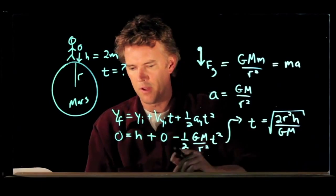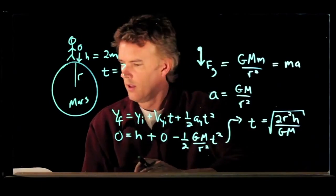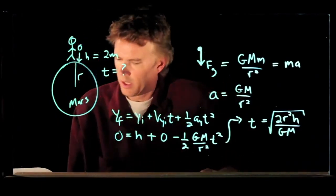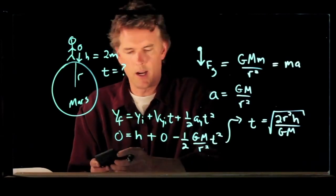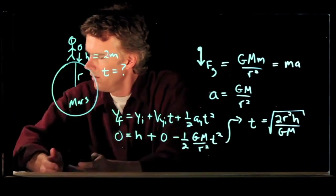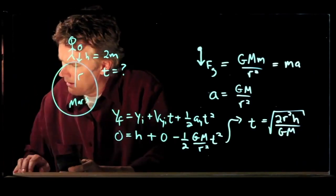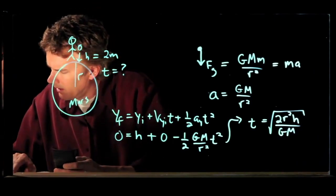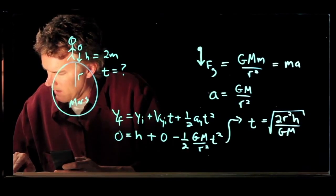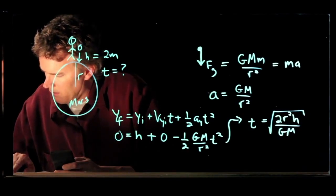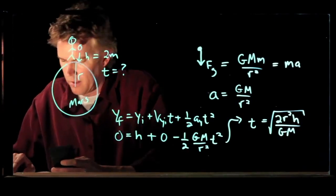And now we have all those numbers and so we can plug it in. So if you look in your textbook or you can look online, you can find the radius of Mars. And the radius of Mars is 3.37 times 10 to the 6.